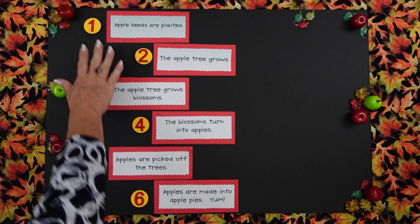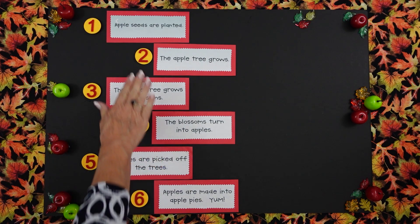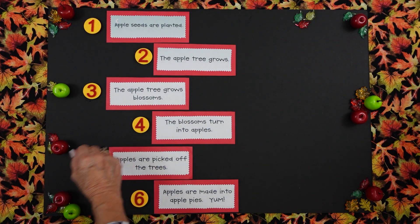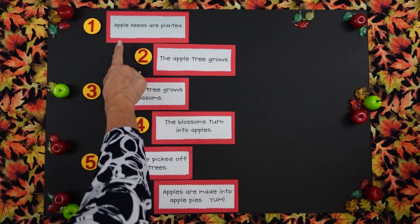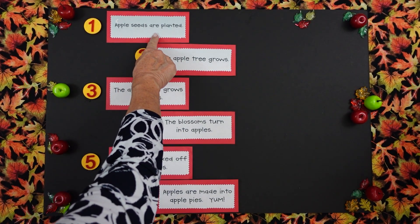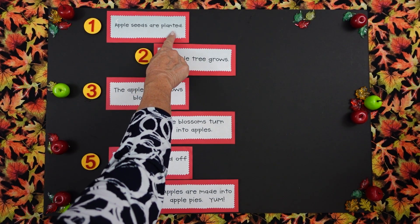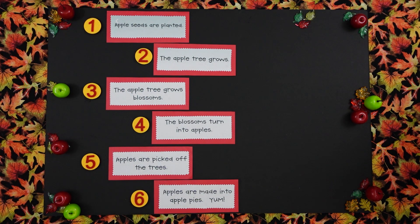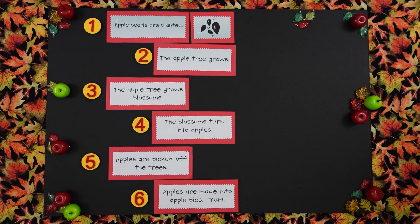Now I see some numbers up here and I see some sentences. Girls, can we read this together? Miss Perry, would you help us? Apple seeds are planted. Jennifer, would you please put this picture by that sentence? Lovely. Thank you.